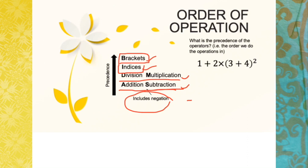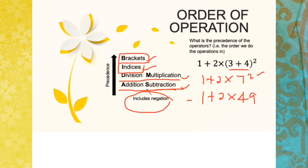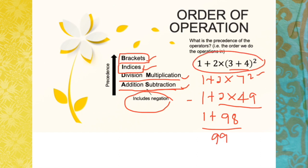For example, we are given 1 + 2 × (3 + 4)². We do the brackets first: 1 + 2 × 7². Then we evaluate the index: 1 + 2 × 49. Next, the multiplication: 1 + 98. Then the addition gives us a final answer of 99.